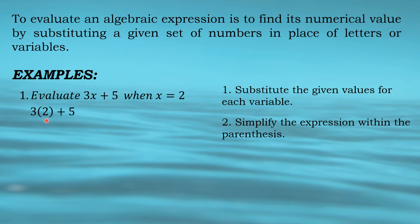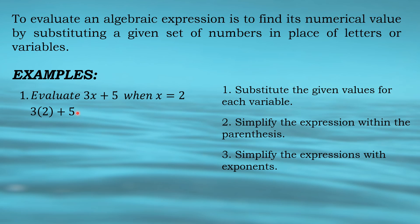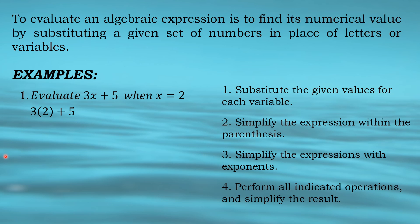Second step is to simplify the expression within the parenthesis. The parenthesis refers to two or more numbers inside it, but here in our solution, since only one number — which is 2 — is inside the parenthesis, we proceed to the third step. Third step is to simplify the expressions with exponents — those are the numbers on the upper right of a number. But since we see no exponents in our solution, we proceed to the fourth step: perform all indicated operations and simplify the results, following PEMDAS.